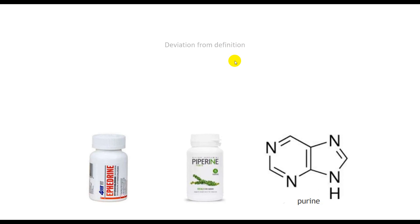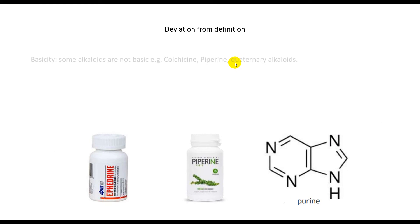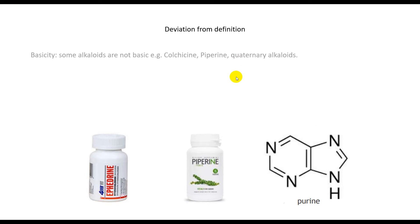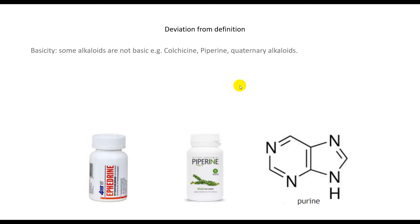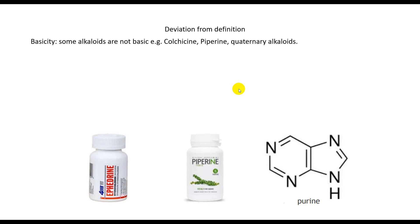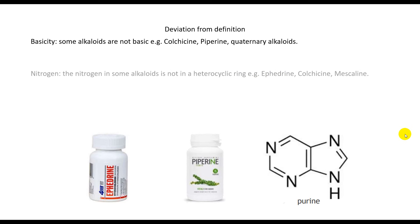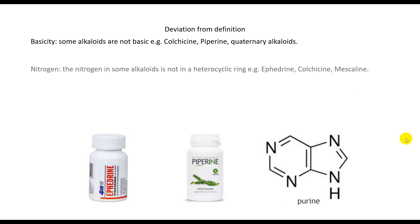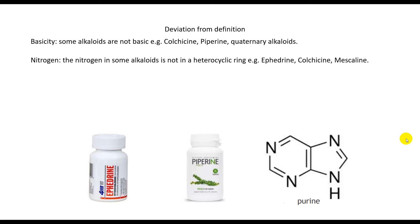Deviations from the alkaloid definition: Basicity — some alkaloids are not basic, e.g., colchicine and piperine. Quaternary alkaloids also exist. Nitrogen — the nitrogen in some alkaloids is not in a heterocyclic ring.